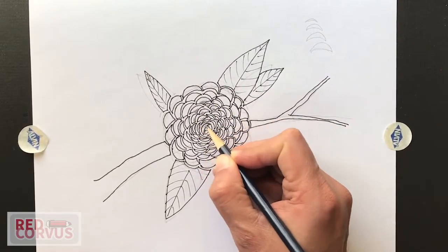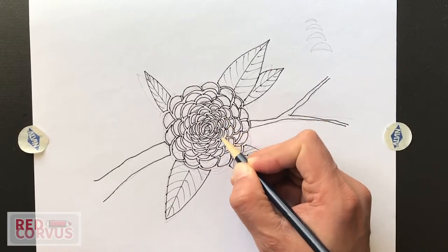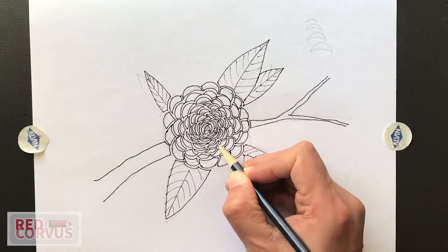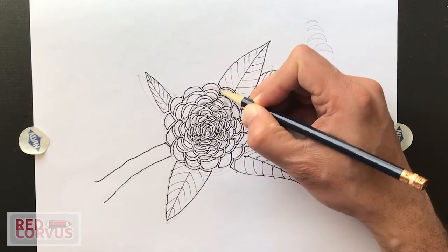I'm shading each petal individually. And all I'm doing is adding a little touch of gray or black towards the inside of it. What this will do is add depth to the structure of the flower.